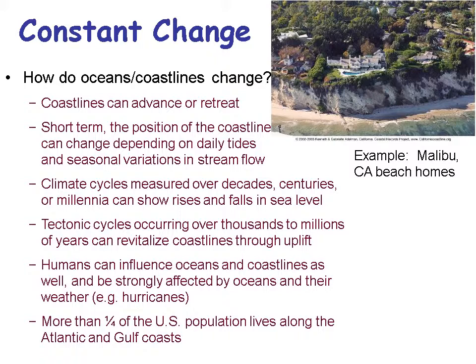Climate cycles are measured over decades, centuries, and millennia, and the rise and fall of sea levels will affect coastlines. Tectonic cycles, occurring over thousands and millions of years, revitalize coastlines through uplift. As continents are uplifted or subside, it affects the shape of continents and the edge we call a coast. Humans can influence oceans and coastlines as well. More than a quarter of the U.S. population lives along the Atlantic and Gulf Coasts, so management of our coastlines is critical.